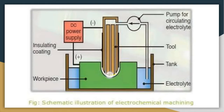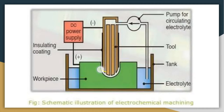By flowing the electrolyte in the inter-electrode gap, electrolysis takes place. As a result of this electrolysis process, anode dissolution — that is, dissolution of material from the work piece — takes place. So electrical energy plays an important role in the electrochemical machining process.